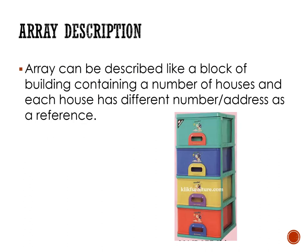The array can be described like a block of buildings — there are four blocks in the same building of houses and each house has a different number or address as a reference. Another example is a rack of boxes: there are four boxes in the same rack, each with its own location. For example, the red box is at the bottom, then yellow, then blue, and the top one is green.